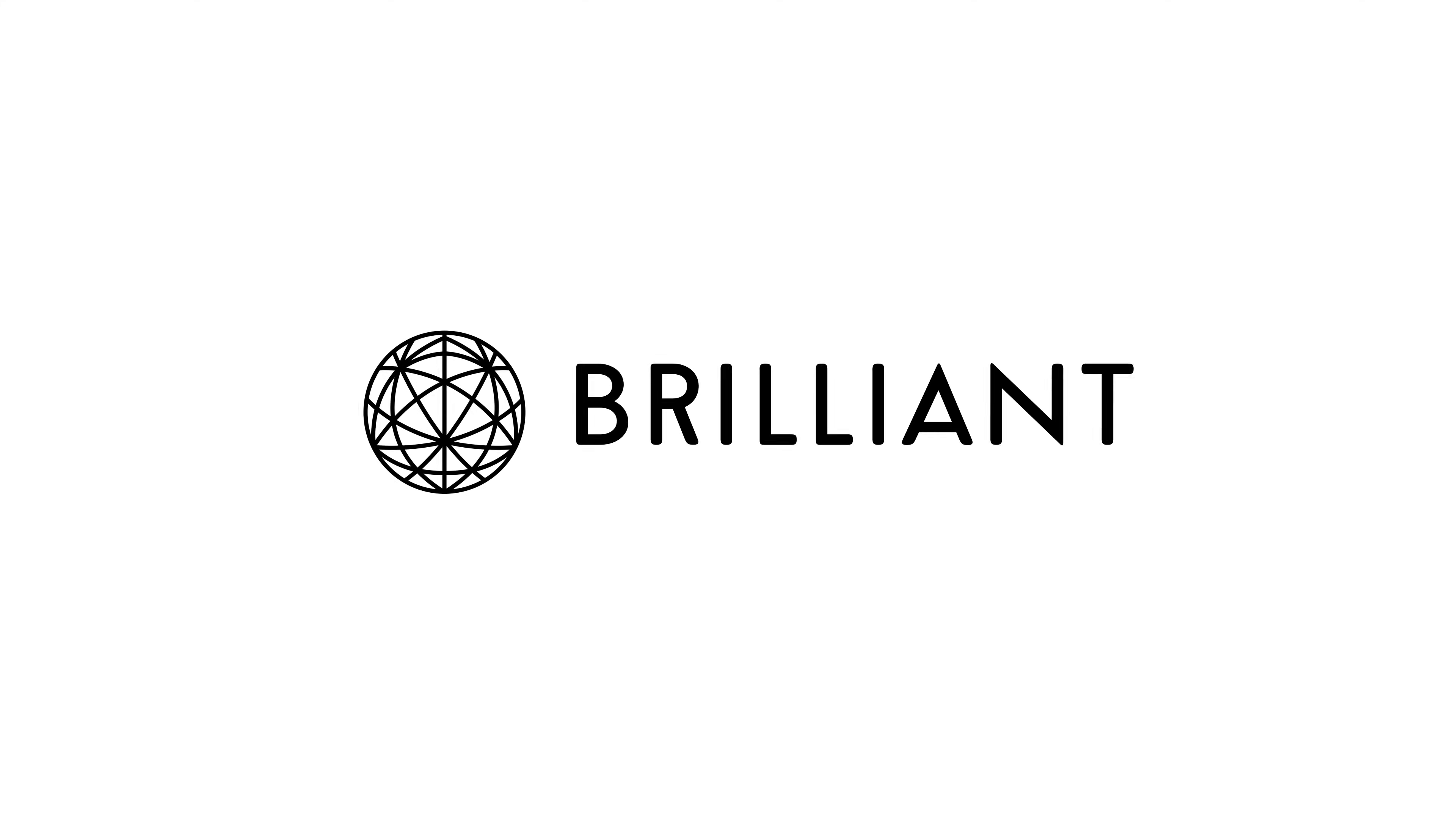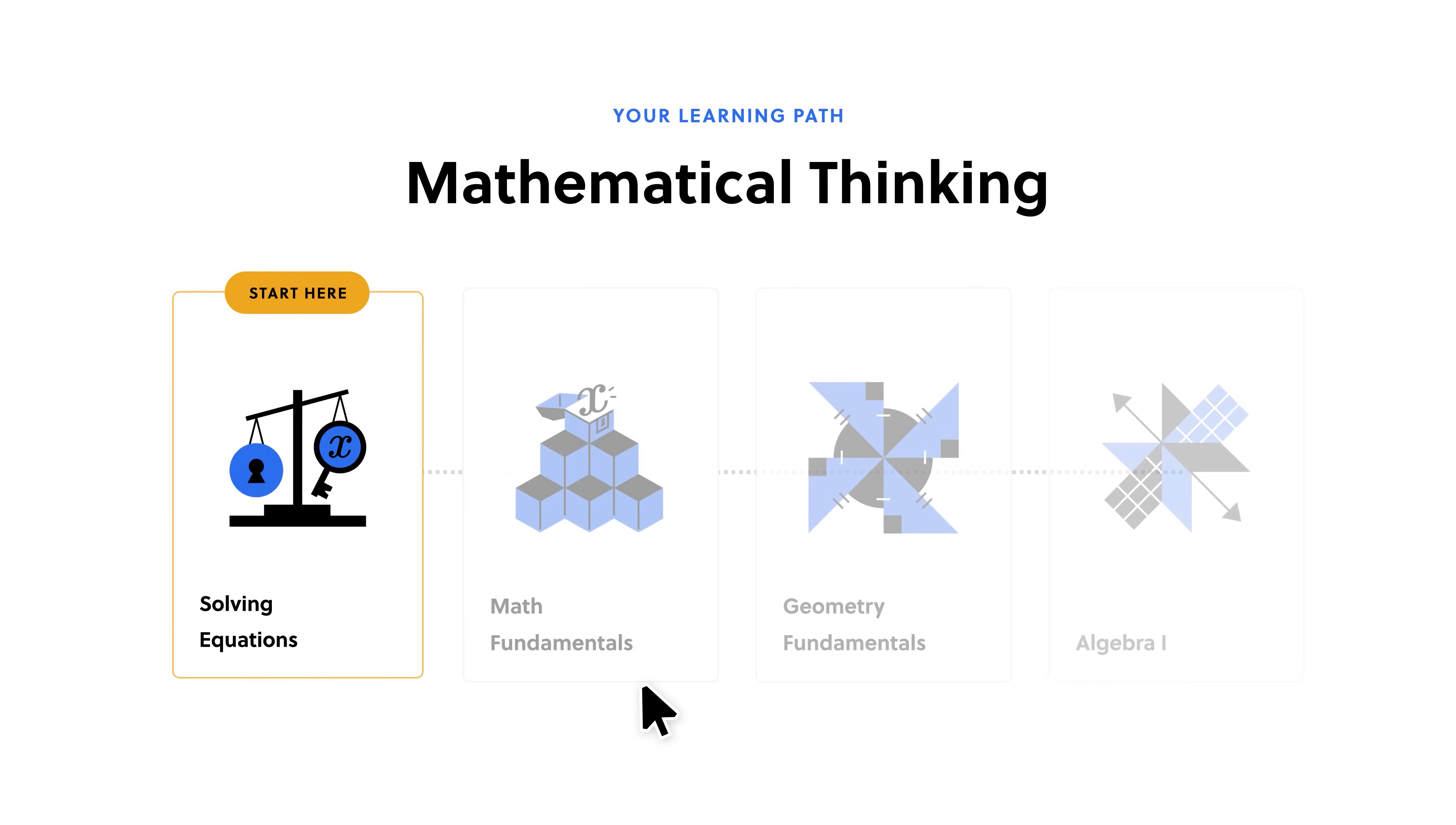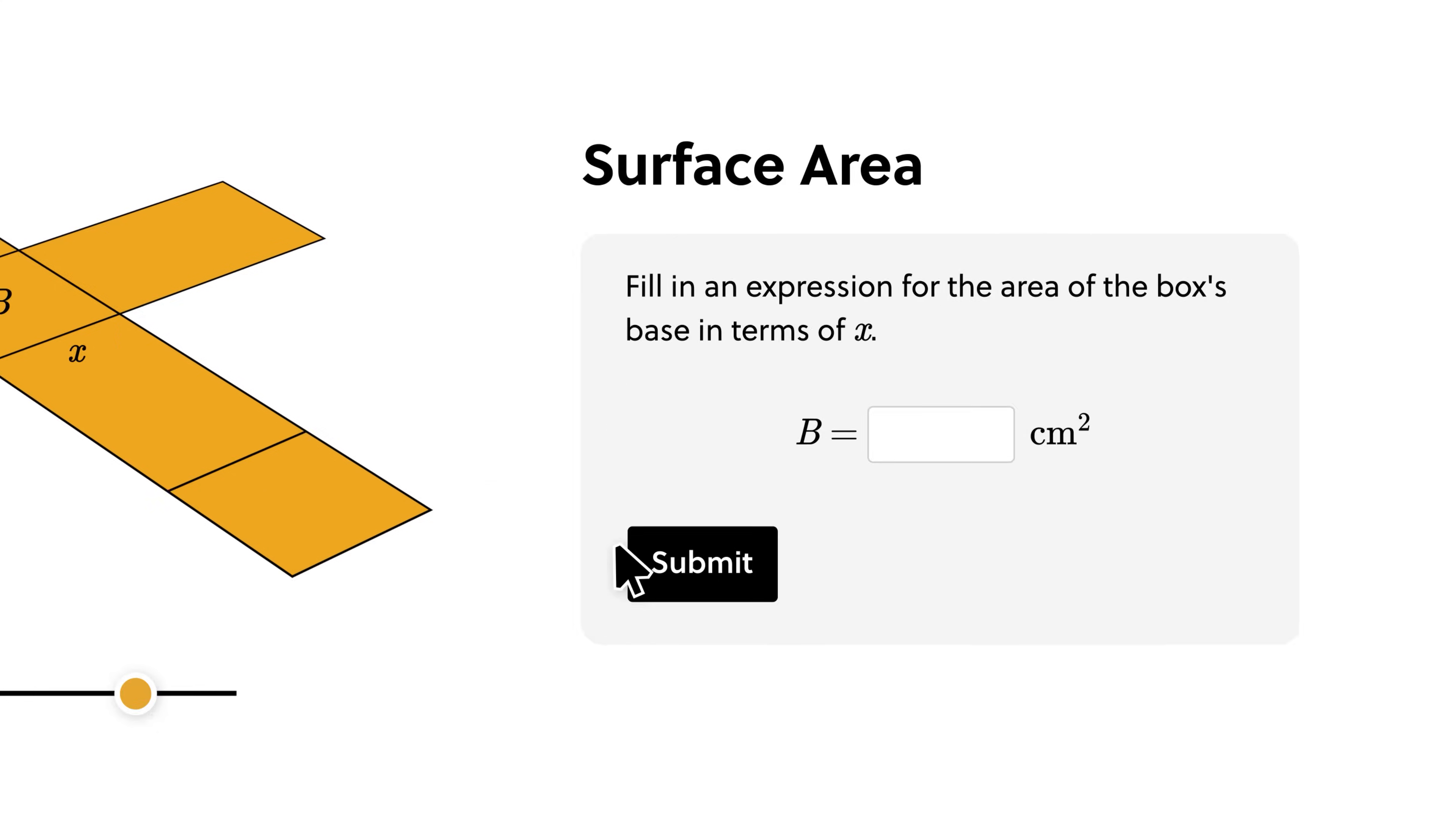I also want to give a huge shout-out to Brilliant.org for sponsoring my video. If you haven't heard of Brilliant, let me tell you why it's one of my favorite websites. Brilliant is the best way to learn math and computer science interactively. Brilliant has thousands of lessons, from foundational and advanced math, to chemistry, physics, data science, AI, and more, with new lessons added monthly.